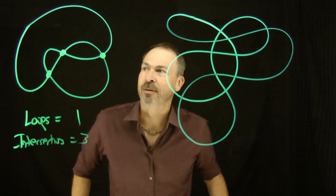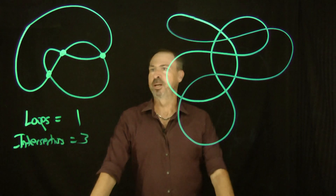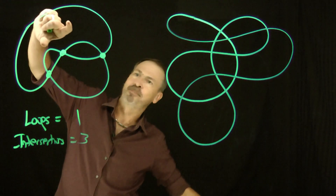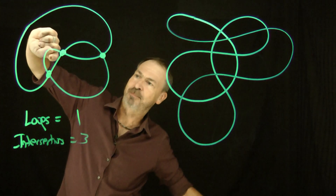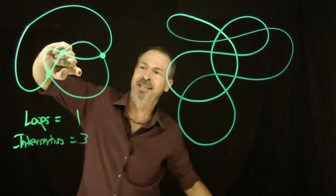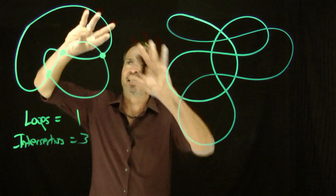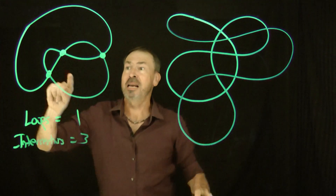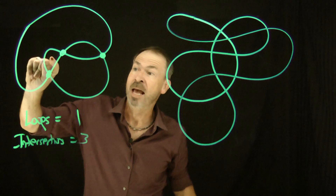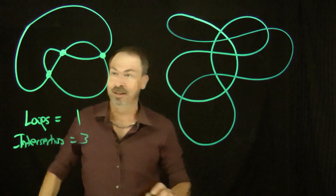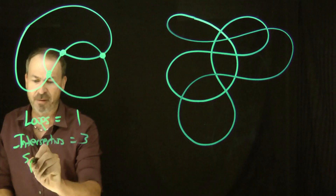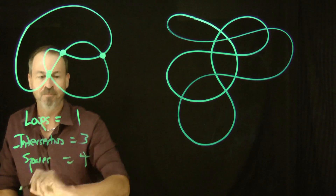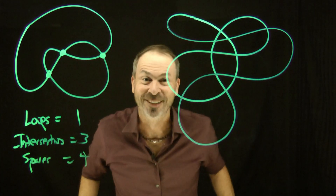And anything else I could count? Well, you look at that and say there are spaces. There's a space there, and there's a space there, and a space there, and a space there. I guess there's a big outside space as well, but that's big and huge. But there are certainly four closed finite spaces. So let's just count the closed spaces — closed spaces, there are four of them. Great, we're just counting stuff.